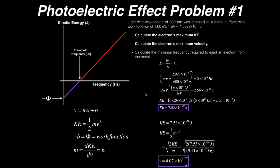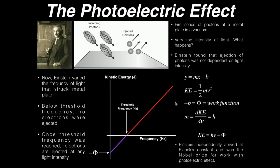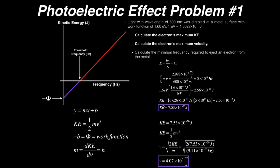The formula tells me that kinetic energy is equal to h times the frequency minus the work function. So to calculate the kinetic energy, I take Planck's constant — 6.626 times 10 to the minus 34th joule seconds — multiply by the frequency of 5 times 10 to the 14th hertz, and then subtract the work function of 2.56 times 10 to the minus 19th joules.